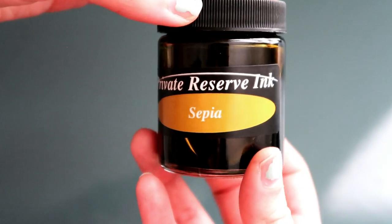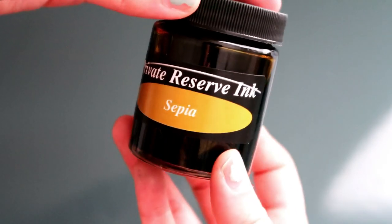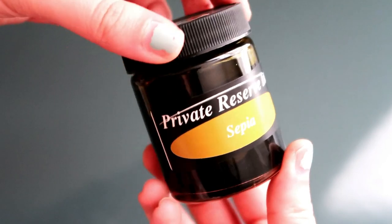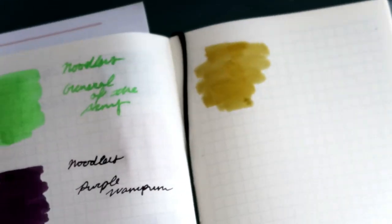The next two inks are from Private Reserve. First up is the color Sepia. I plan on inking up my Perkeo with this one, since I think it will match it better.